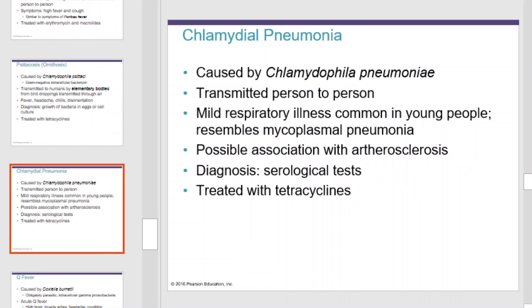Chlamydial pneumonia is caused by Chlamydophila pneumoniae and transmitted person to person. Symptoms include mild respiratory illness and it is common in young people, resembling Mycoplasma pneumoniae. Diagnosis is done with serological tests and it is treated with tetracycline.